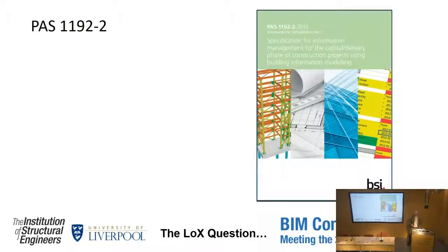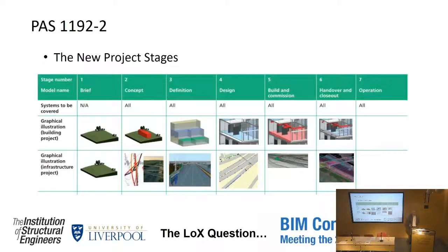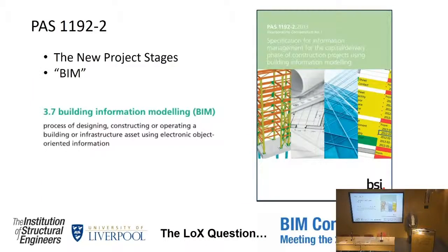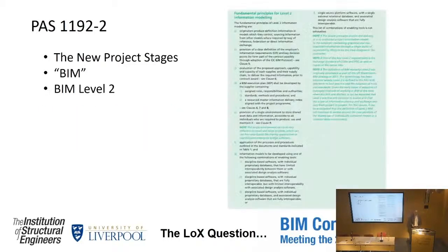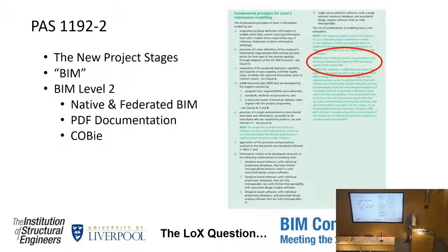PAS 1192 Part 2 gave us a lot of things: the new project stages — one through to seven, instead of the letters of the alphabet — and the definition of what BIM actually is. Going back to a point raised earlier, it's about designing, constructing or operating a building or infrastructure asset, so it's not just about design and construction. It also defines Level 2, and interestingly, COBie is actually in PAS 1192 Part 2. One of the key Level 2 requirements is the exchange of COBie and PDF as well as copies of the native file. So when people say we don't need to do COBie and still claim Level 2, there's a question mark around that.